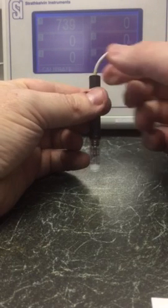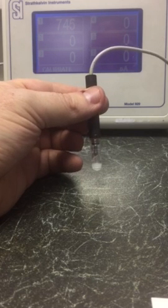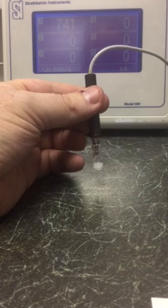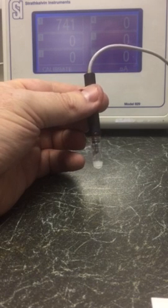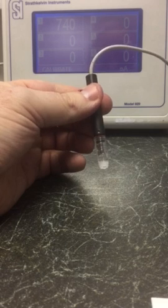Okay, today I'm going to show you how to maintain a 1302 cathode oxygen electrode. You can see here that this electrode output is about 742 picoamps, which is slightly high for cathode in air.